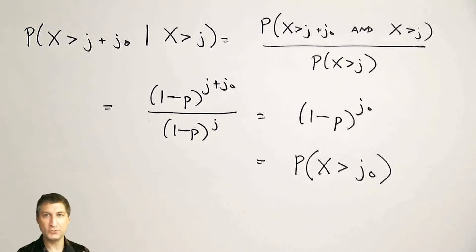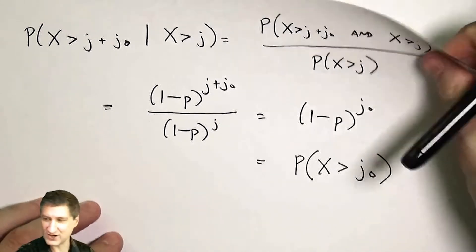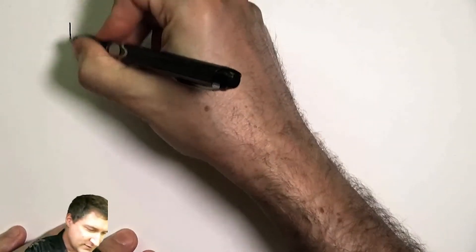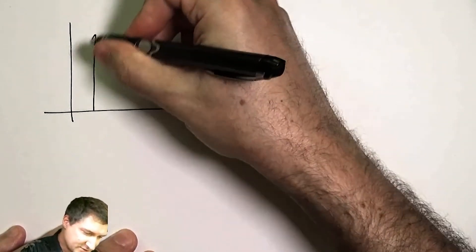So this is only true for the geometric random variable. A different way of looking at this graphically is kind of like saying, if I were to look at the geometric random variable,